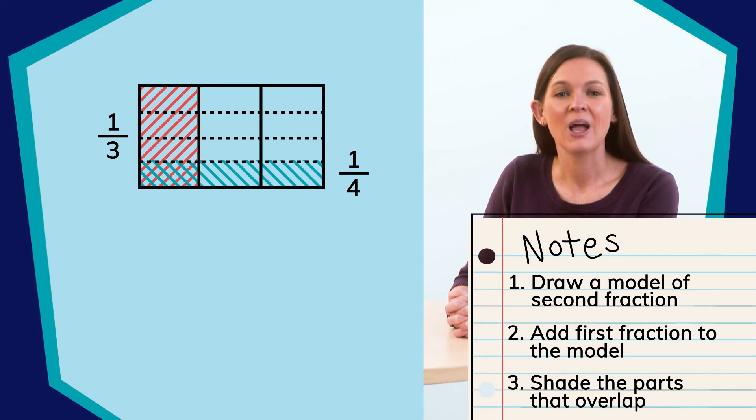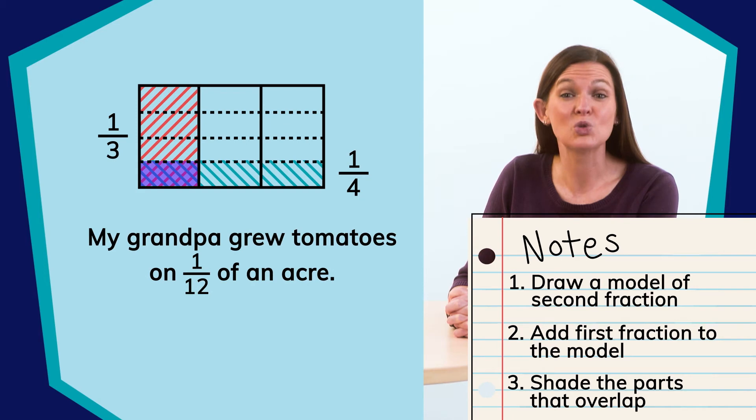Exactly, twelve. Of those twelve, how many are shaded by both the third and the fourth? Great, one. So, my grandpa grew tomatoes on one-twelfth of an acre.